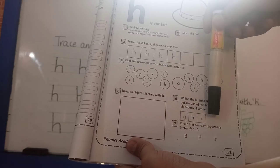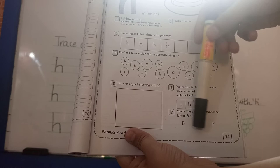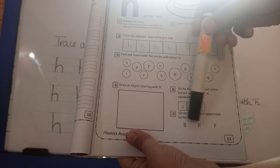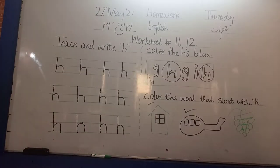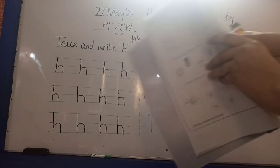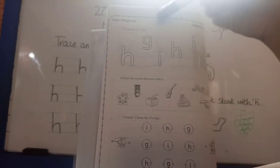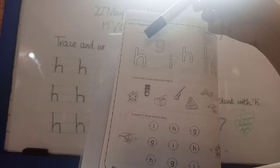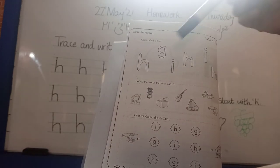Circle the correct uppercase letter H. This one is uppercase letter, so connect with small letter H. Okay, color the H blue. Find out the H letter and circle the letter H blue.